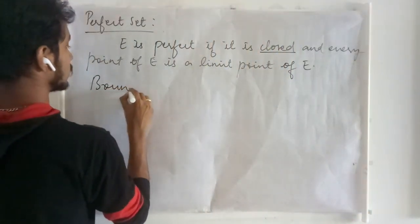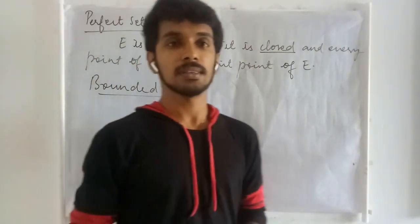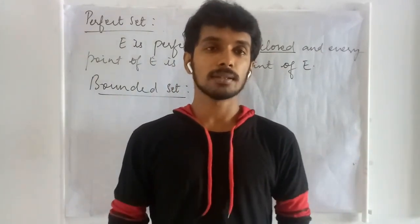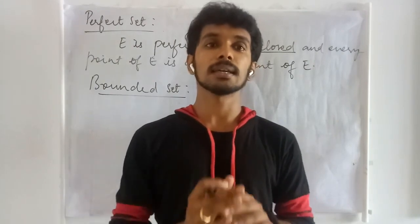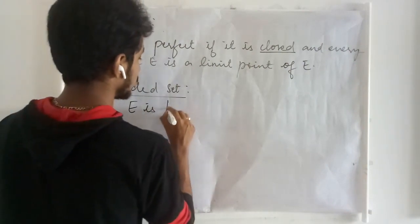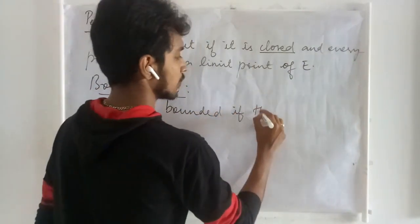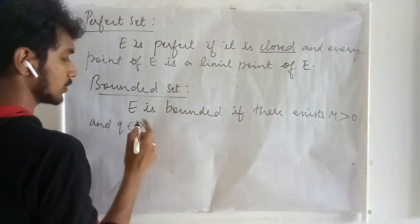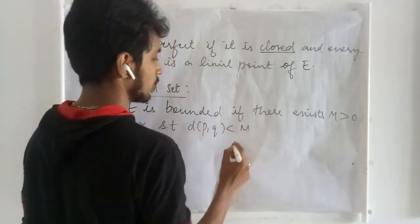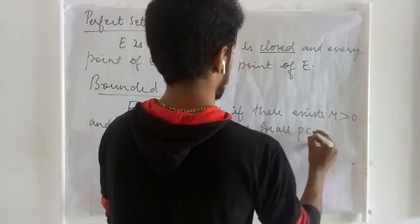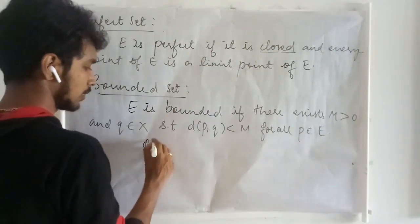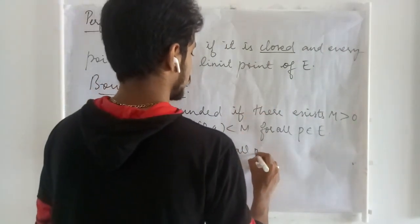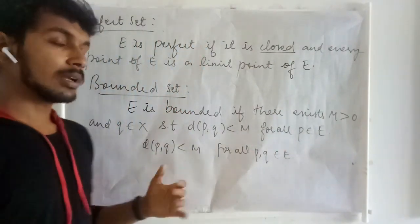Next, we are going to define a bounded set. We have seen the boundedness of a set in a standard metric setup before we came into basic topology. Here, we are going to define boundedness in a general metric setup. A set E is said to be bounded if there exists a positive real number M and some point Q in the metric space such that d(P, Q) is less than M for all P in E. Equivalently, d(P, Q) less than M for some fixed M greater than 0, for all P, Q in E.